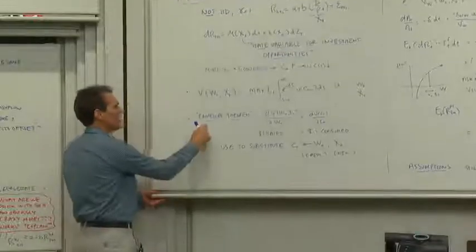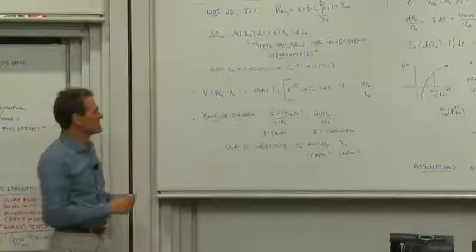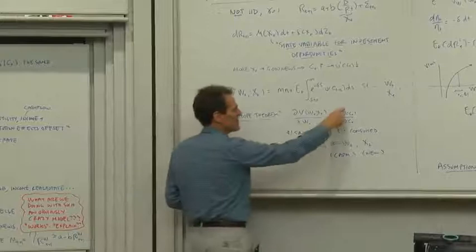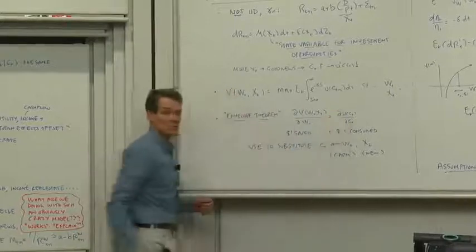Next, there is an envelope theorem that says the derivative of V with respect to wealth is the same as the derivative of utility with respect to consumption. That's a very intuitive theorem.